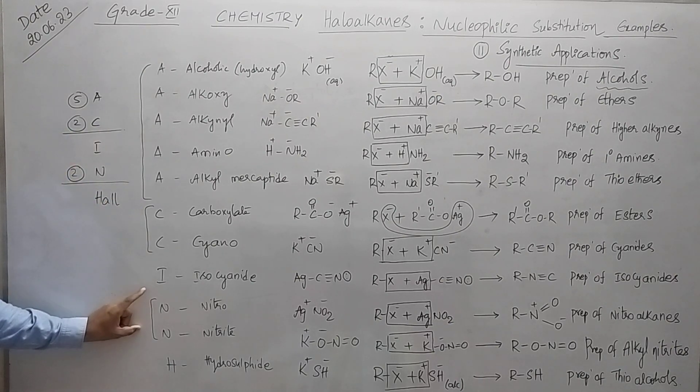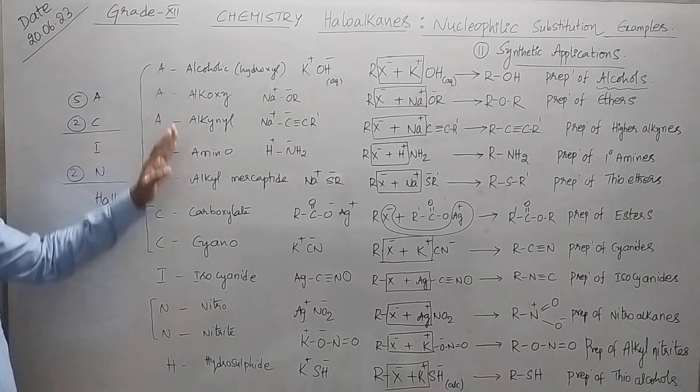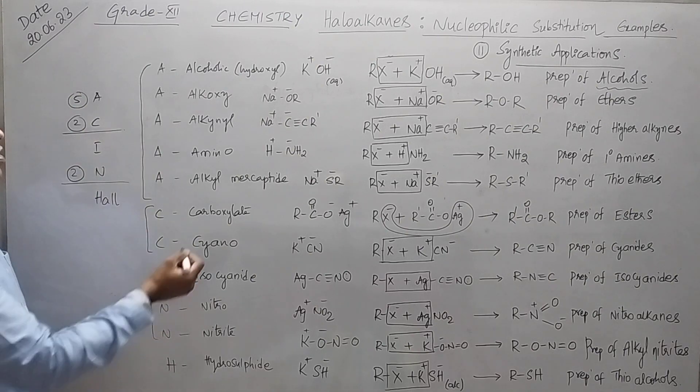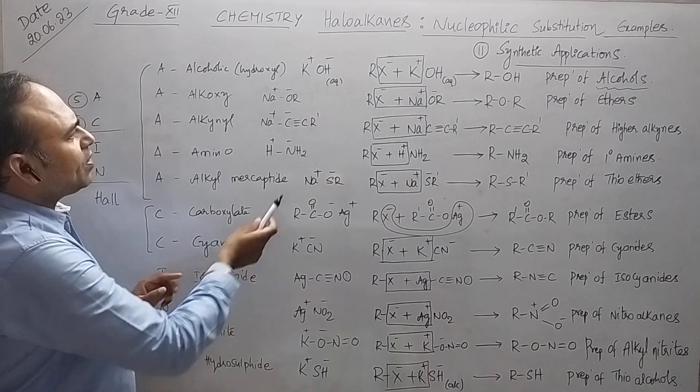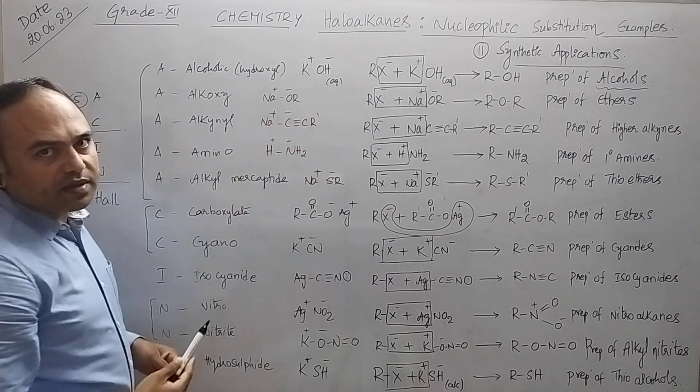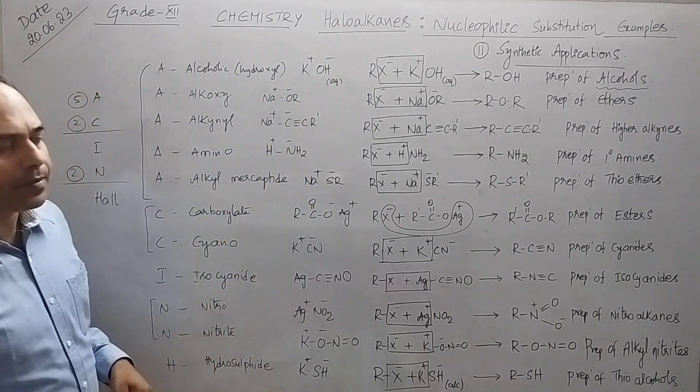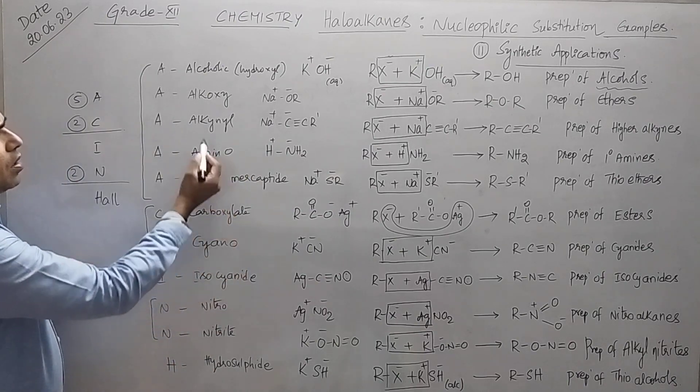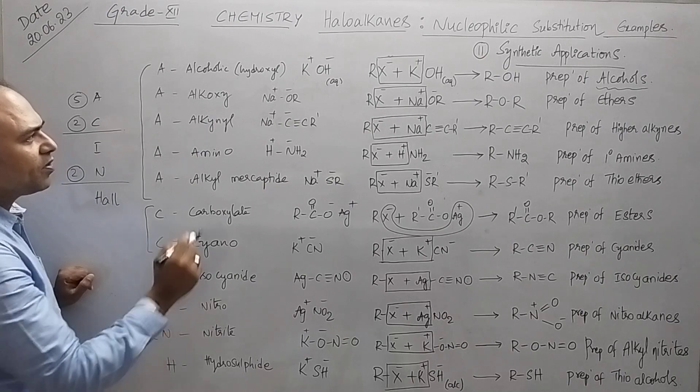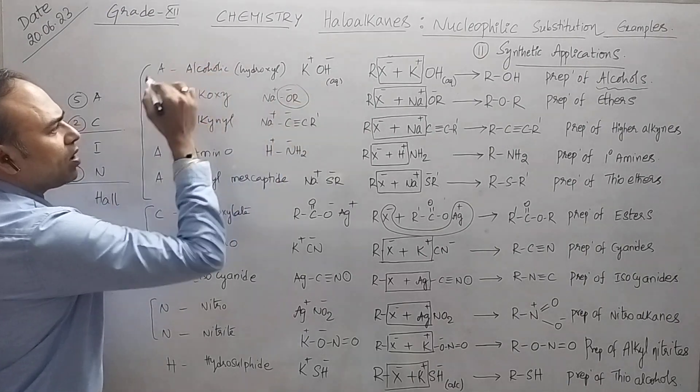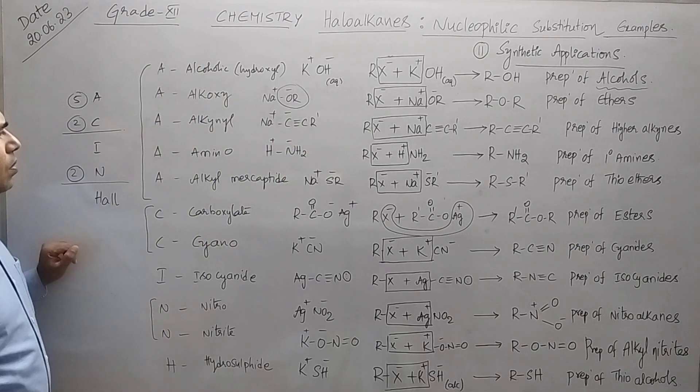Next, write 2N. Adjacent to that you can write easily all the nucleophiles. So alcoholic group, that is hydroxyl, we will get it from potassium hydroxide aqueous KOH, so OH minus is the nucleophile here. Similarly, if you observe alkoxy, sodium alkoxide is the compound from which you will get OR minus as the nucleophile.